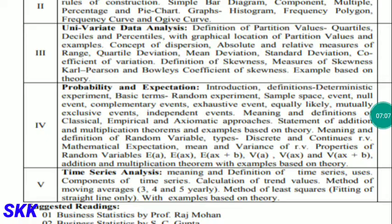The fourth unit deals with probability and expectations. Here you will study what is an experiment, what is a sample, what is an event, what is a random variable, and how mathematical expectations are calculated. This unit focuses on the concept of probability, also known as the game of chance.